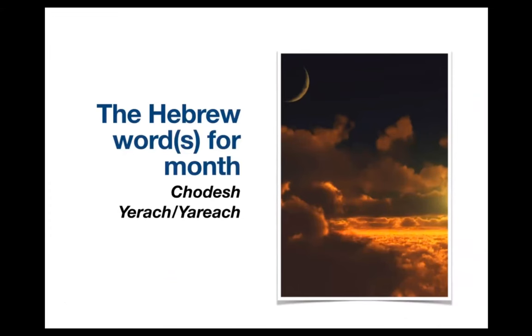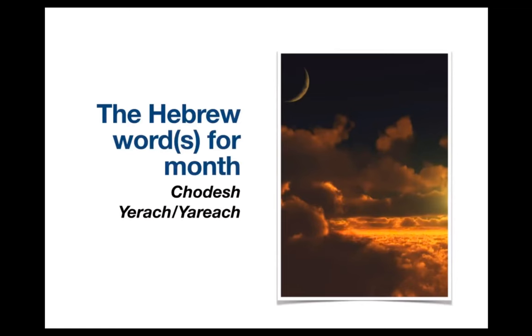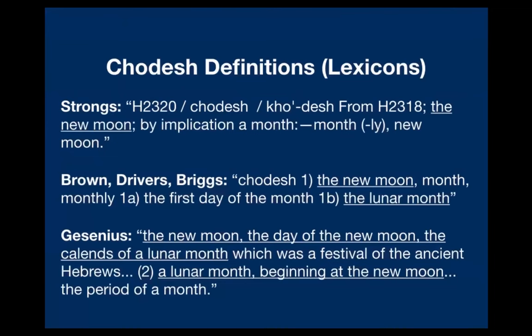In the King James Version, hodesh is translated as 'new moon' 18 times, as 'new moons' (plural) 22 times, and as 'month' or 'monthly' the remaining 239 times. If hodesh has no relation to the moon, why do all Bible translators relate the moon to the word hodesh? All three Hebrew lexicons I have — Strong's, Brown-Driver-Briggs, and Gesenius — tie the word hodesh to the moon. Strong's says 'the new moon, by implication a month.' BDB says 'new moon, month, the first day of the month, the lunar month.' Gesenius says 'the new moon, the day of the new moon, the calends of a lunar month, a lunar month beginning at the new moon.'